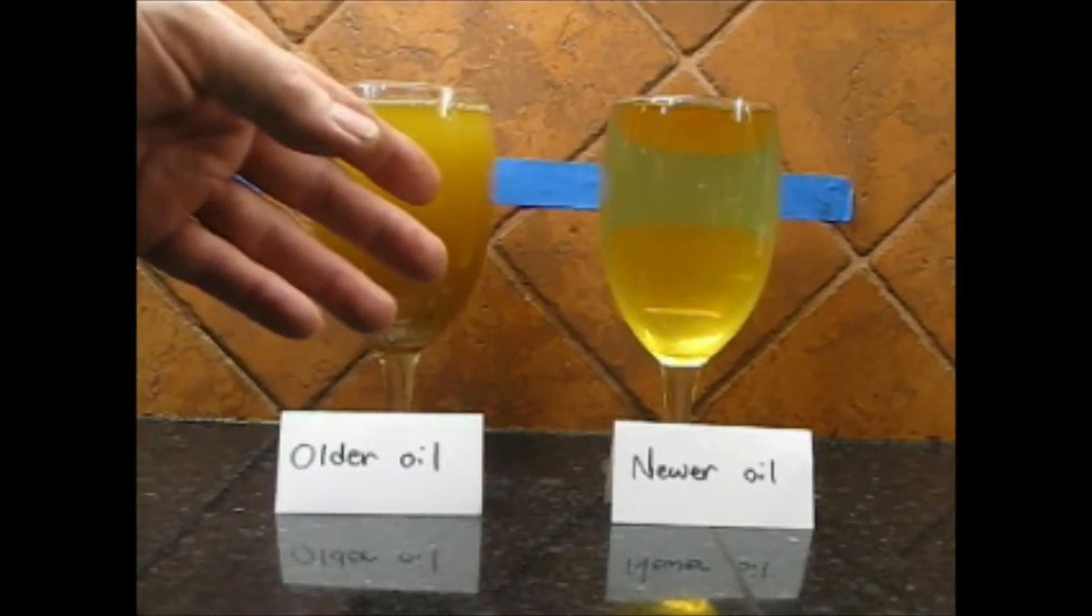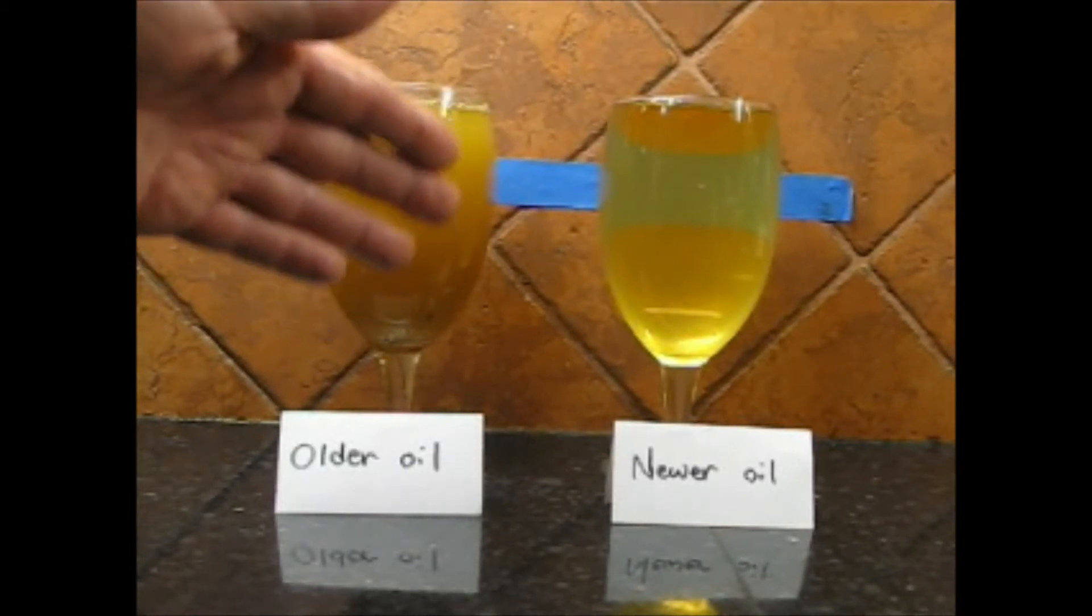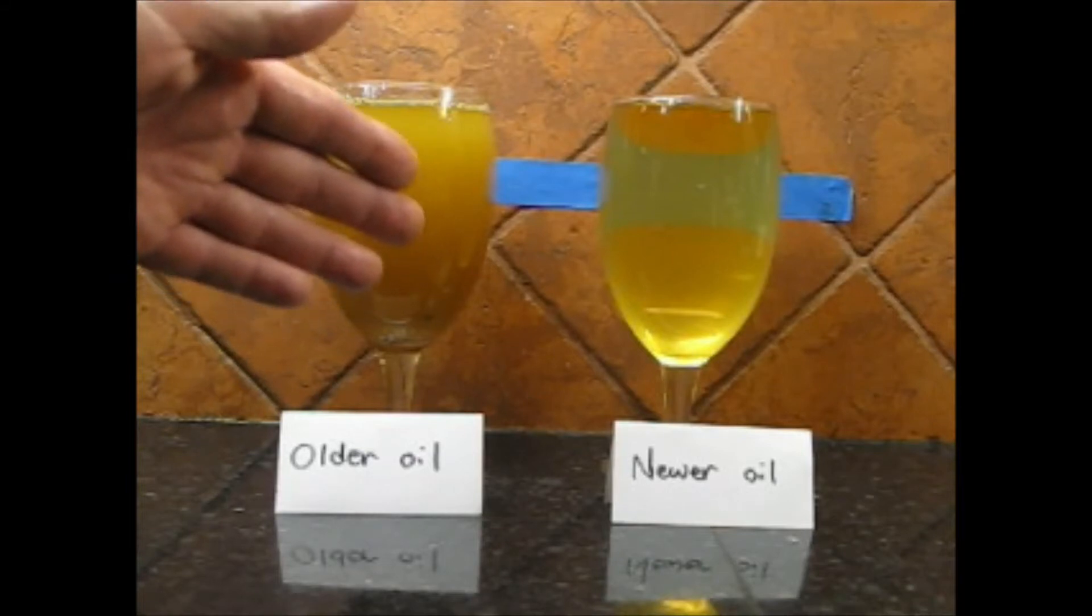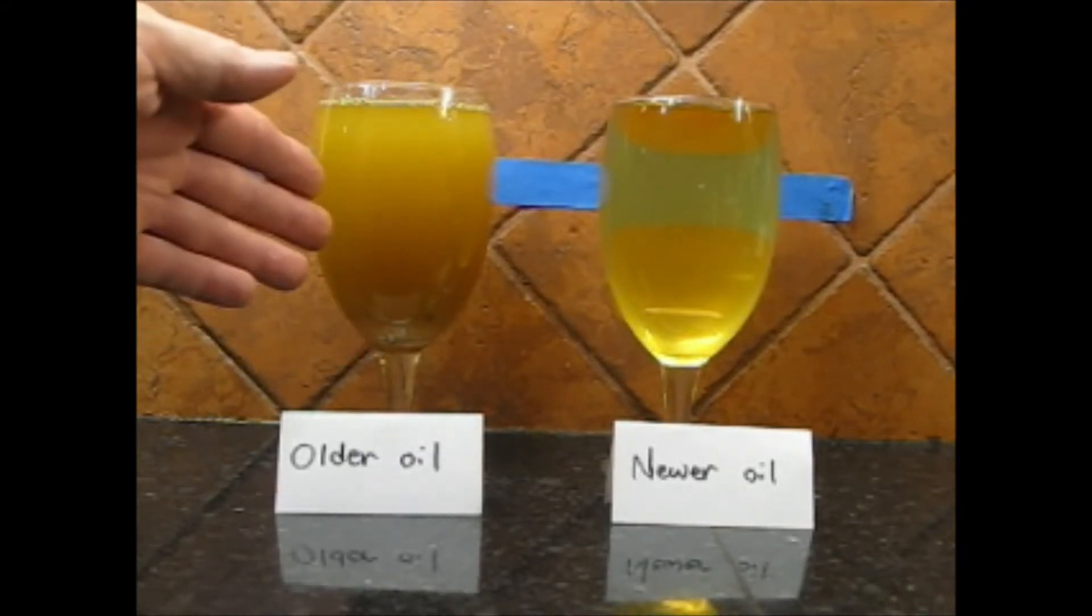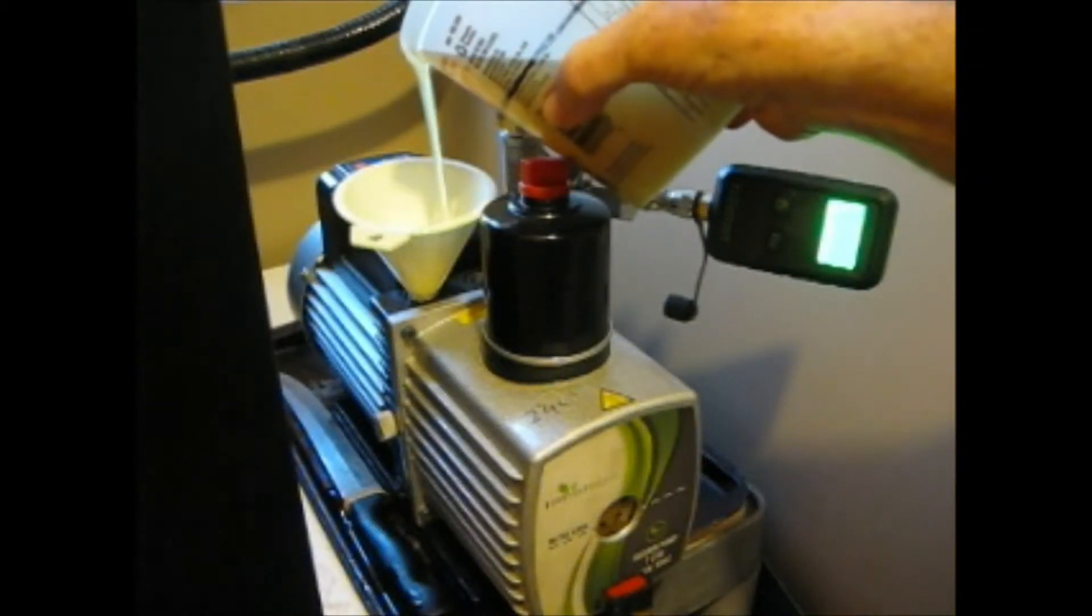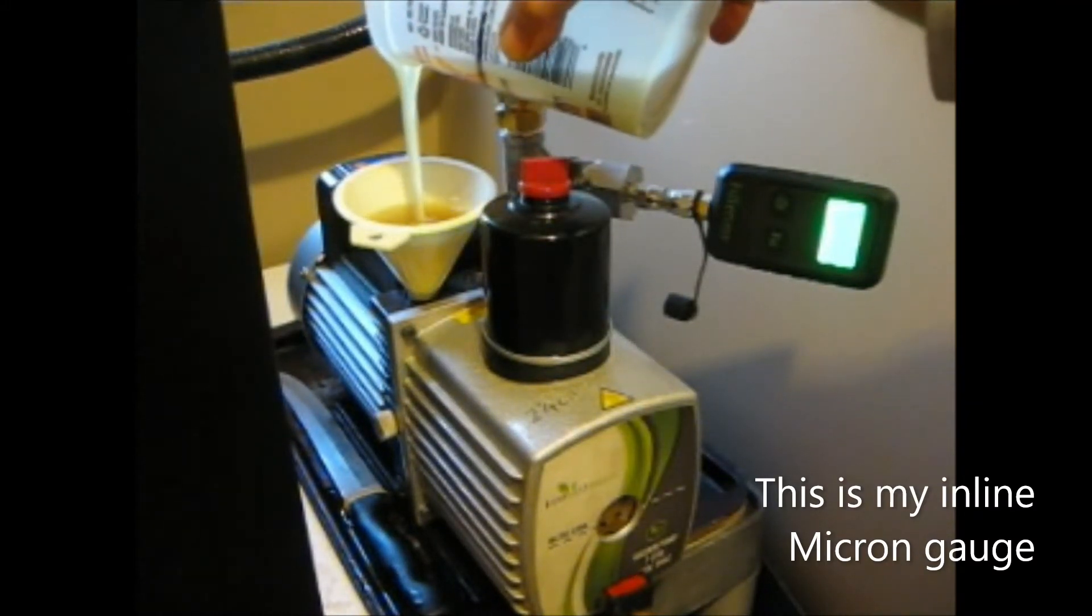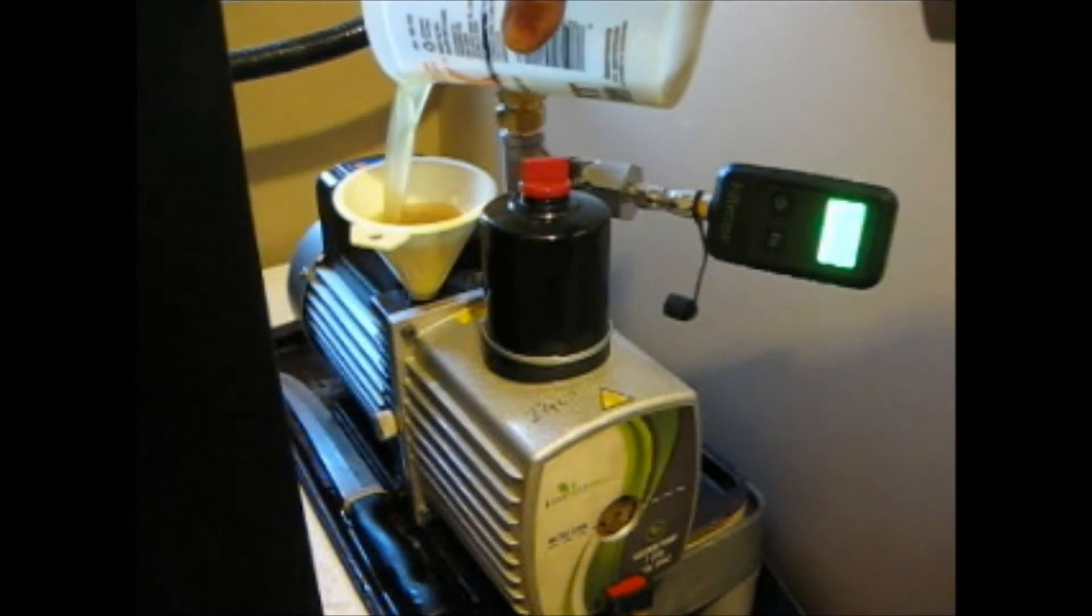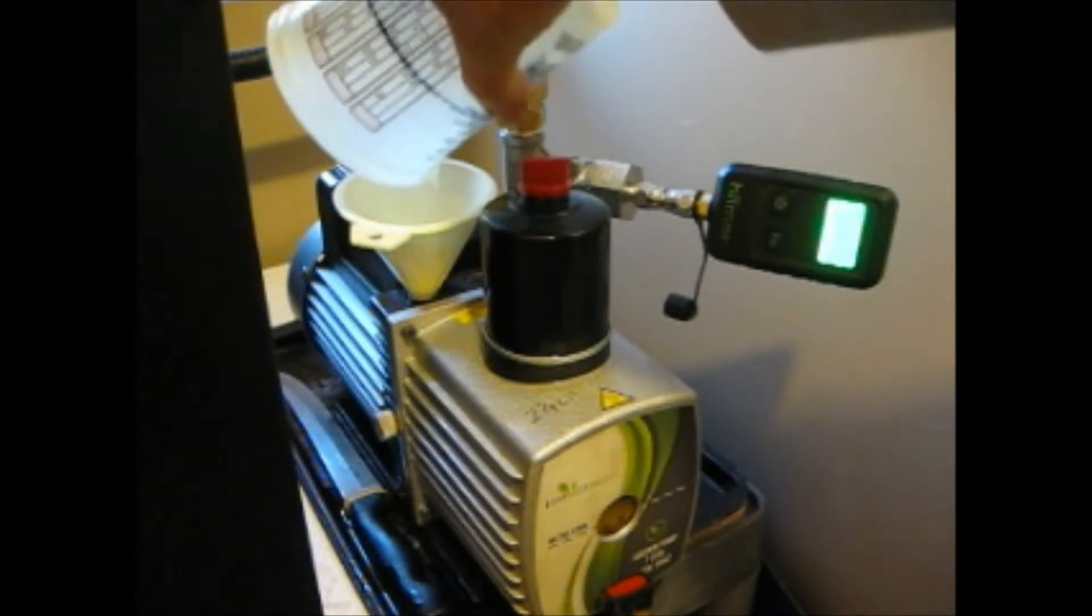So what we're going to do, we're going to put this oil back into the vacuum pump and we're going to see how long it takes and how deep of a vacuum we can reach with older oil and newer oil. This is the old oil we're going to put into the pump. You can see how thick it is and it's kind of disgusting altogether.